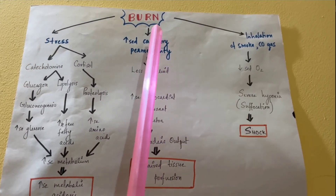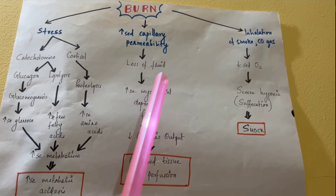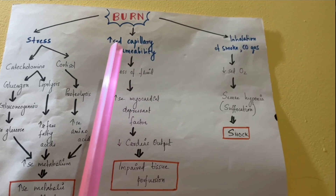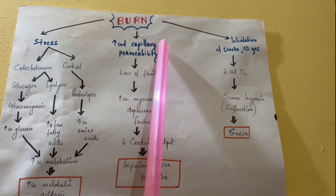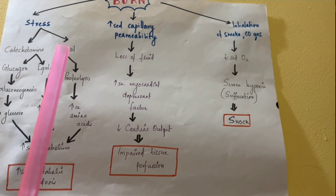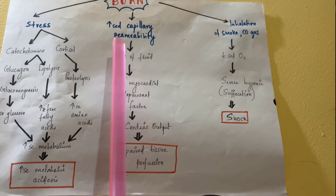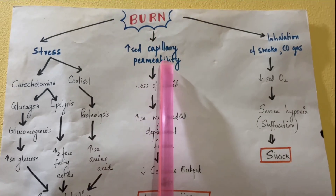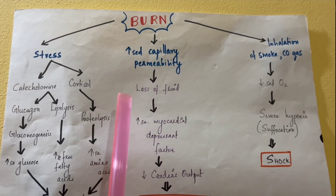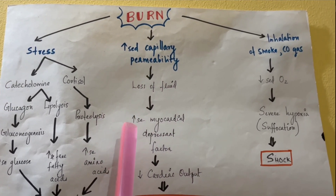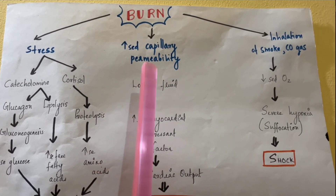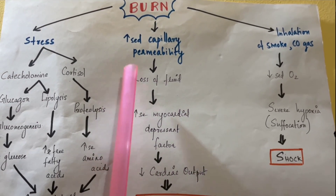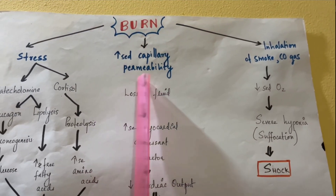The second major factor is increased capillary permeability. Capillaries are very fine blood vessels arranged like a mesh or network. Permeability refers to the ability of molecules to pass through the vessel walls. In burns, we see increased capillary permeability, meaning more molecules are allowed to pass through.